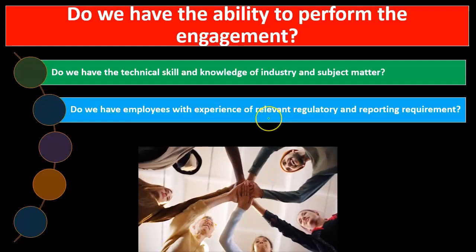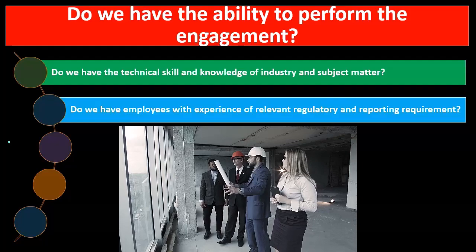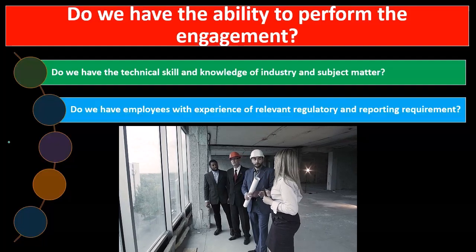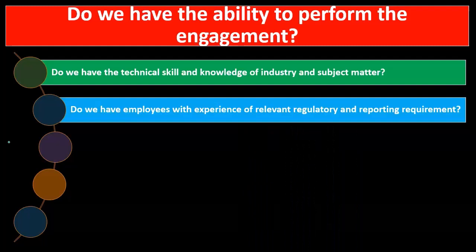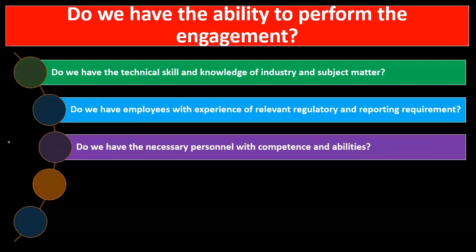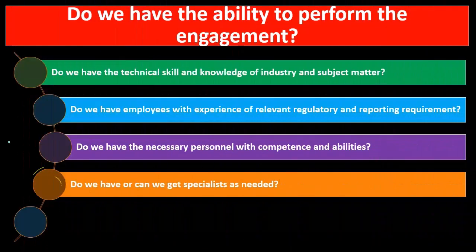Do we have employees with experience in the relevant regulatory and reporting requirements? Different industries have different requirements. For example, auditing a homeowners association at the state level has specific requirements that may differ from our typical niches. We need people who know those regulations and what is needed in the audit, as well as sufficient personnel with the competence and abilities to conduct it.